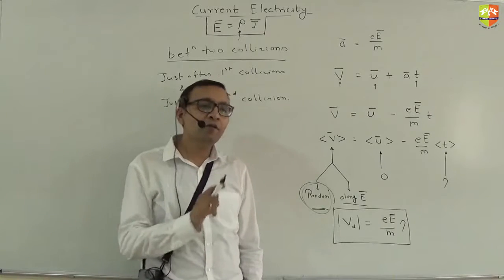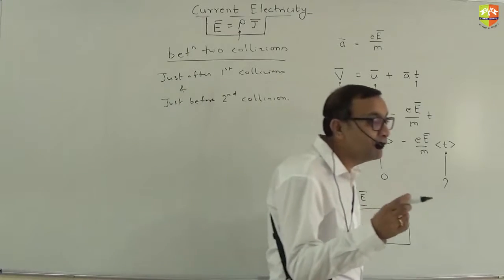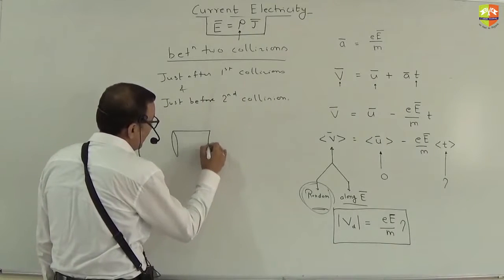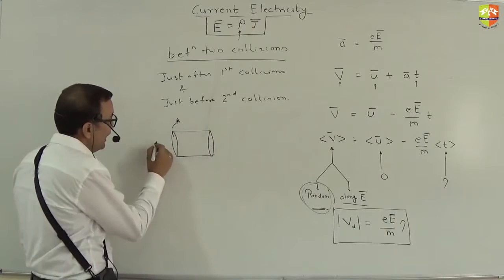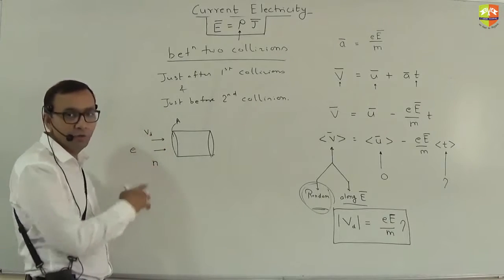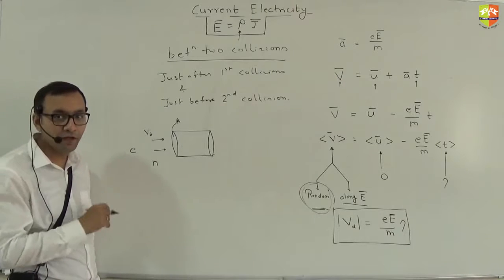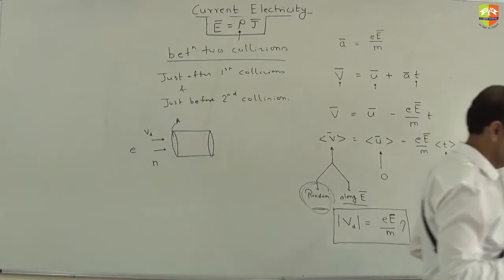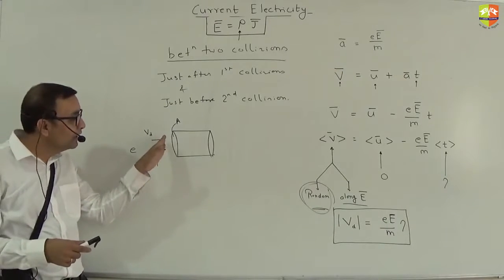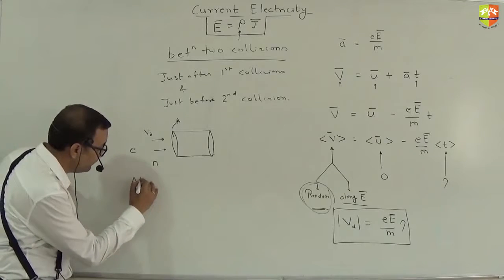We have found out drift velocity — why? Because in terms of drift velocity we can find out the value of current. Assume you have a cross-section of area A, electrons are moving with drift velocity v_d, charge is e, and number of electrons per unit volume is small n. We need to find out in delta t time how much charge will cross this area.